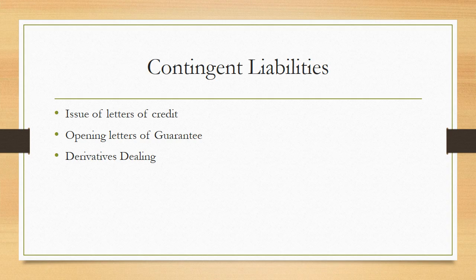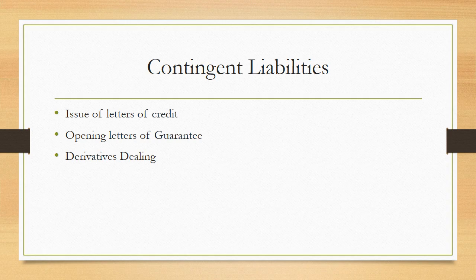Contingent liabilities: a contingent liability is an off-balance-sheet item. A liability arises out of a present obligation as a result of past events where the settlement is expected to result in an outflow of resources by way of payment to creditors. A contingent liability, on the other hand, is a possible obligation which could arise depending on whether some uncertain future event occurs. It could also arise where there is a present obligation but payment is not probable or the amount cannot be measured reliably. In the case of banks, contingent liabilities can generate substantial income. A major contributor is the non-funded business that banks take on, such as the issuance of letters of credit, opening of letters of guarantee, and derivative dealings.